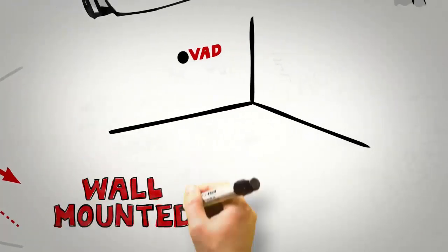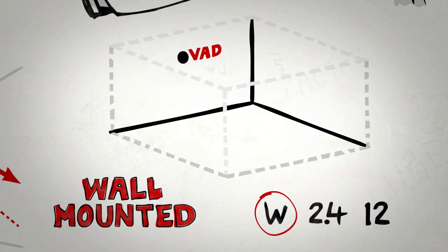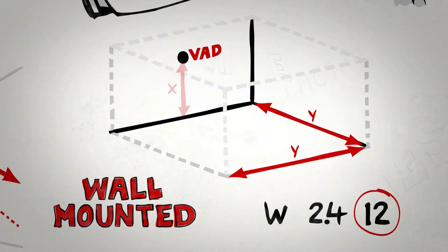The light level from a wall-mounted VAD is measured in a cube shape. The performance of this device is presented in a code like this one, where W stands for the wall category. 2.4 is the height that the device should be mounted at on the wall, and 12 tells us that it will cover an area of 12 meters by 12 meters.